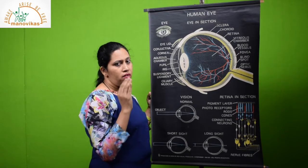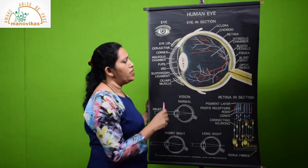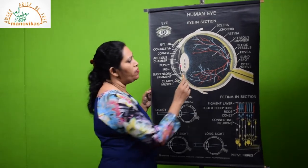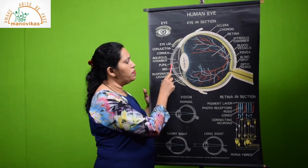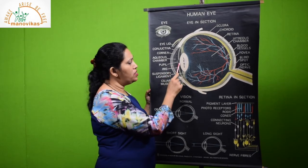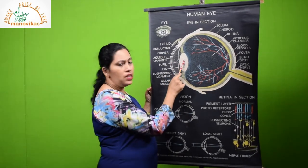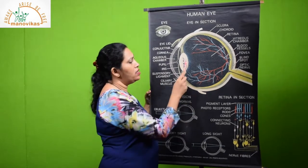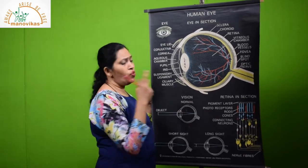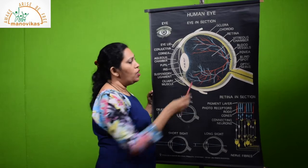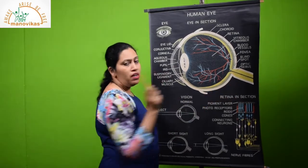The pupil either dilates in darkness or it contracts when it is bright light and takes care that either more or less light enters the eye so it doesn't damage. Coming to how this image is falling on the retina, when you see any object, it first touches the cornea, then it is directed inside. It bends slightly, when it touches through the pupil, it goes and touches the lens. It bends more, and the image which falls on the retina is inverted.